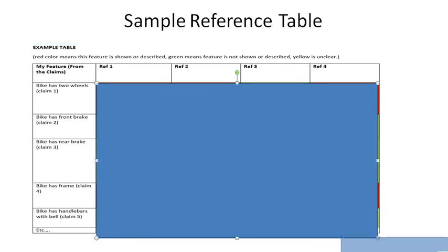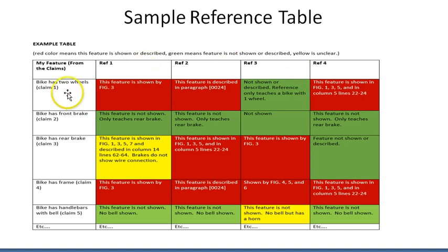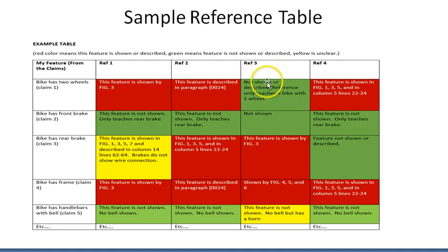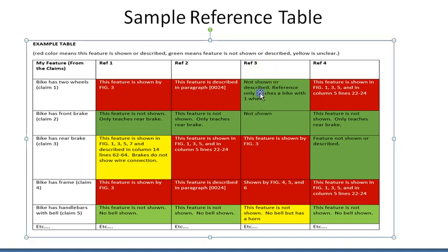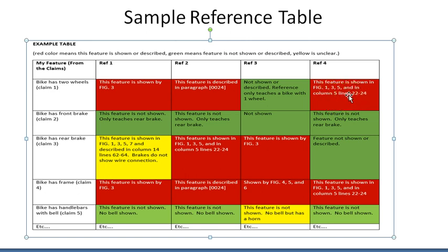As the inventor, you go through each of these references and look for each feature. For the first feature — the bike has two wheels — I looked at reference one and the examiner's right; this feature is shown in figure three. I've color-coded that red, meaning the reference taught a bike with two wheels, so that may not be a unique or patentable feature. But in reference three, a bike having two wheels isn't shown — the examiner only found a unicycle. So I've color-coded that green. And in reference four, figures one, three, five, and column five of the description all discuss a bike with two wheels, so the examiner's right there.